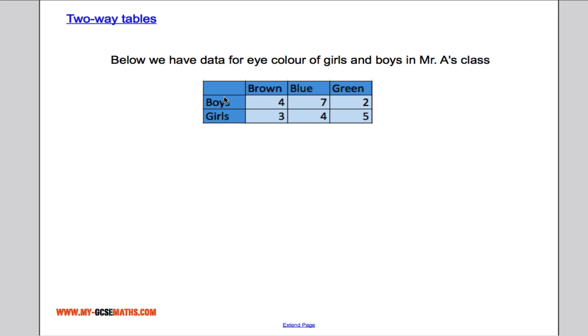So, for example, from this two-way table I can clearly see that seven of the boys in Mr. A's class have blue eyes. Two of the boys have green eyes, three of the girls have brown eyes, and so on. So there's lots of things I can see straight away from my two-way table.